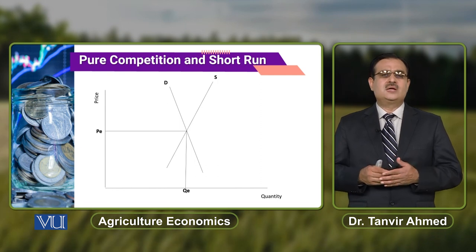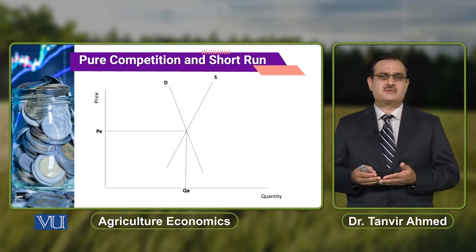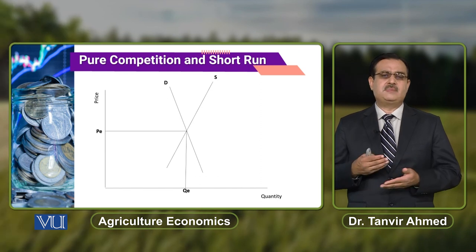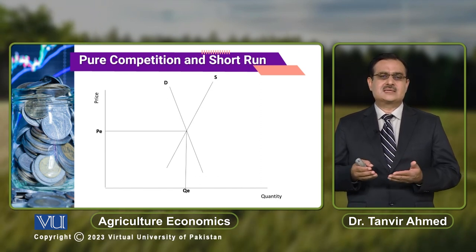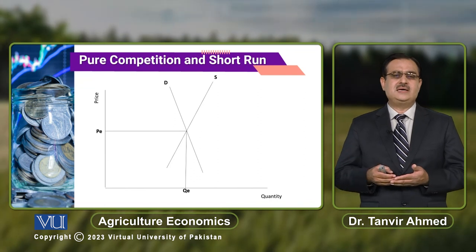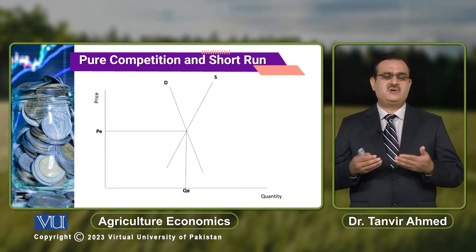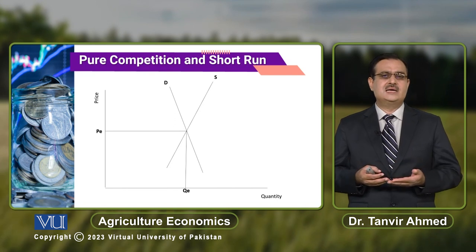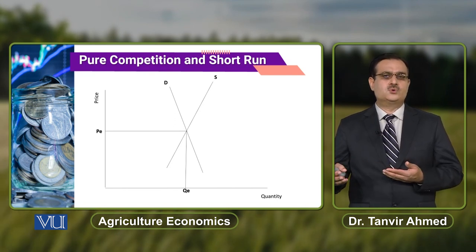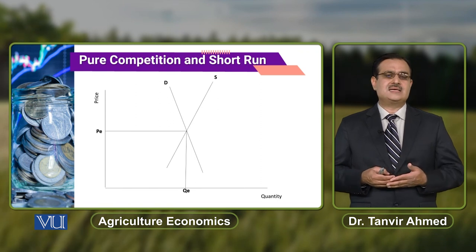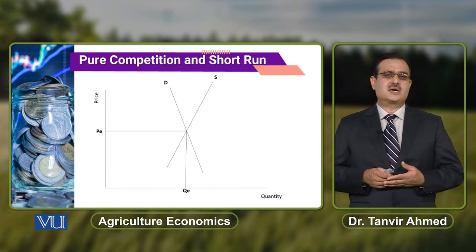Summarize करें तो: in pure competition under short run, prices are determined in the market. लेकिन producer या farmer will decide about the level of output — how much to produce against the equilibrium price, against the price that prevails in the market.